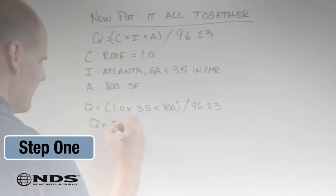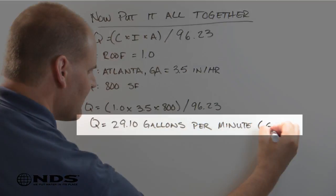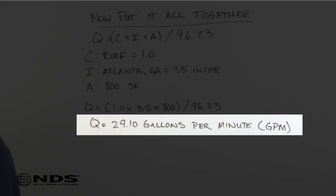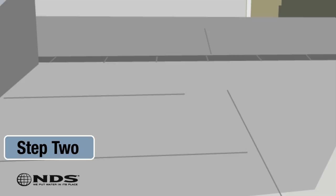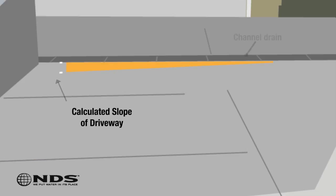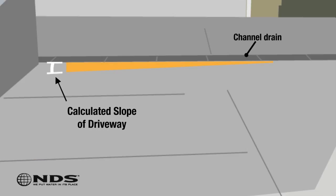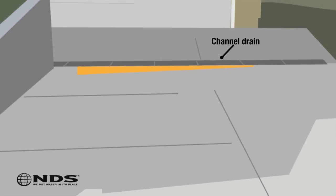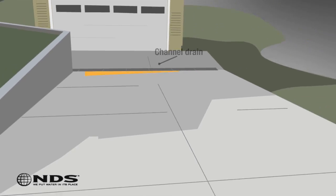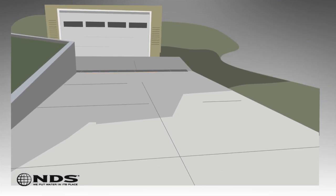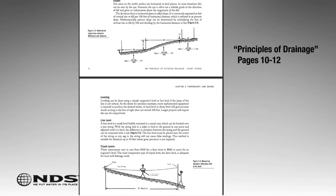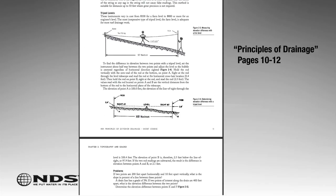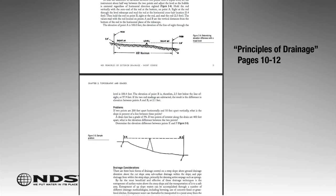Step 1: Calculate the runoff draining to the location of the channel drain. Step 2: Figure out the slope of the surface where the channel drain will be installed. The slope on a channel drain greatly affects the amount of water the channel can convey. Steps to determining slope can be found on pages 10-12 of our Principles of Drainage.